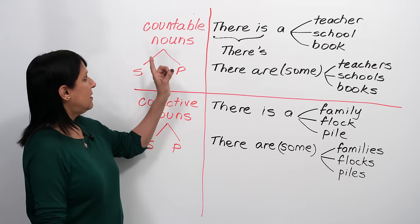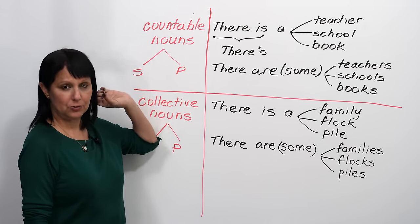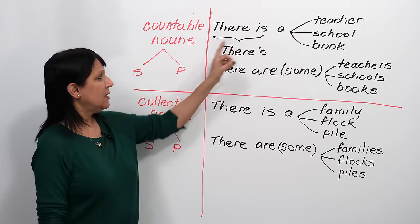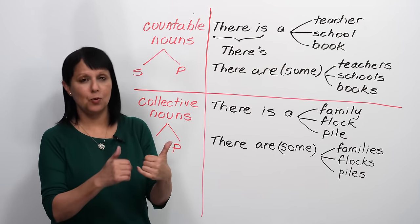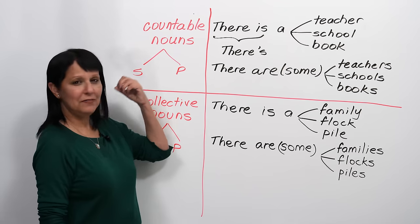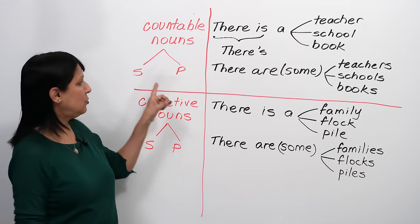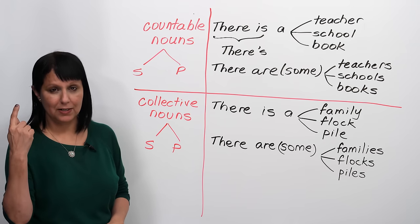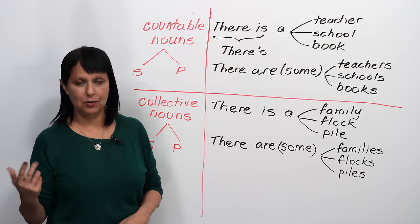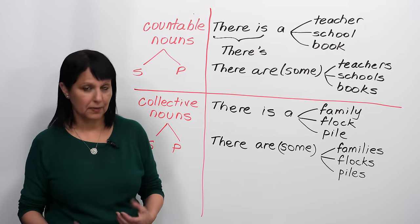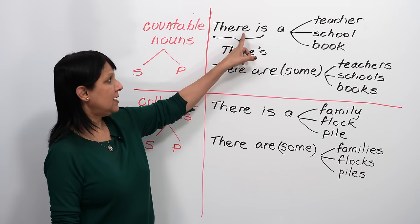First, we have a situation with countable nouns. A noun is a person, place, thing, idea, or quality. So if we have a noun which we can count, you could have a singular noun — which means one — or you could have a plural noun, which means more than one. When we have one, we say 'there is.'